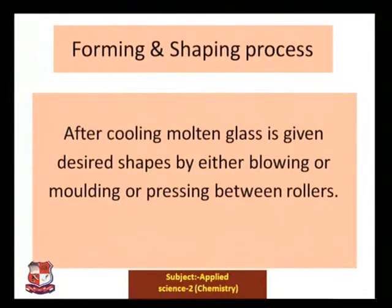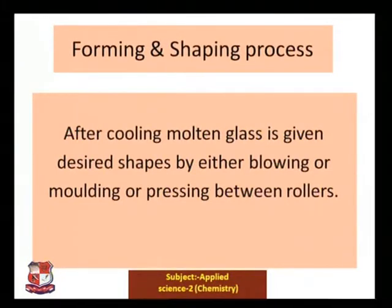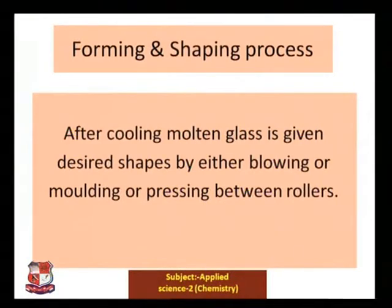In the second phase — forming and shaping — after cooling, the molten glass is given a desired shape by either blowing, molding, or pressing between rollers.